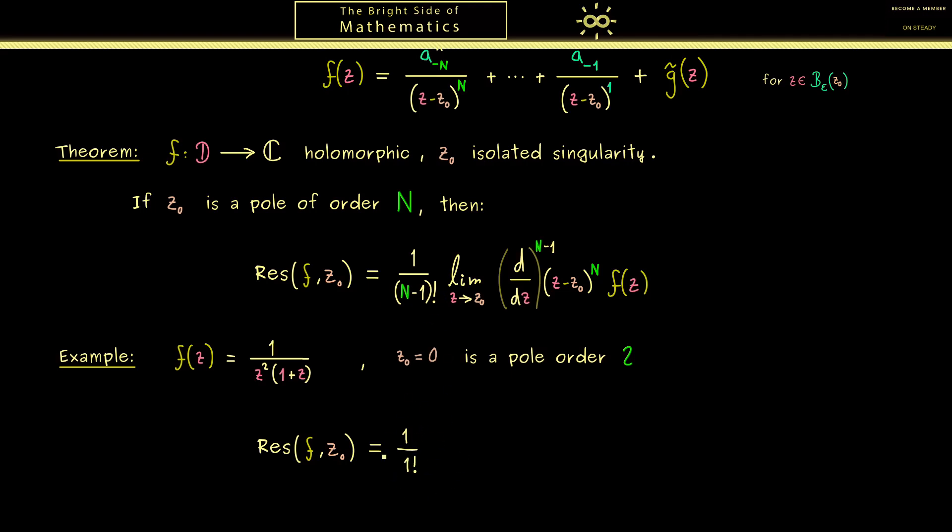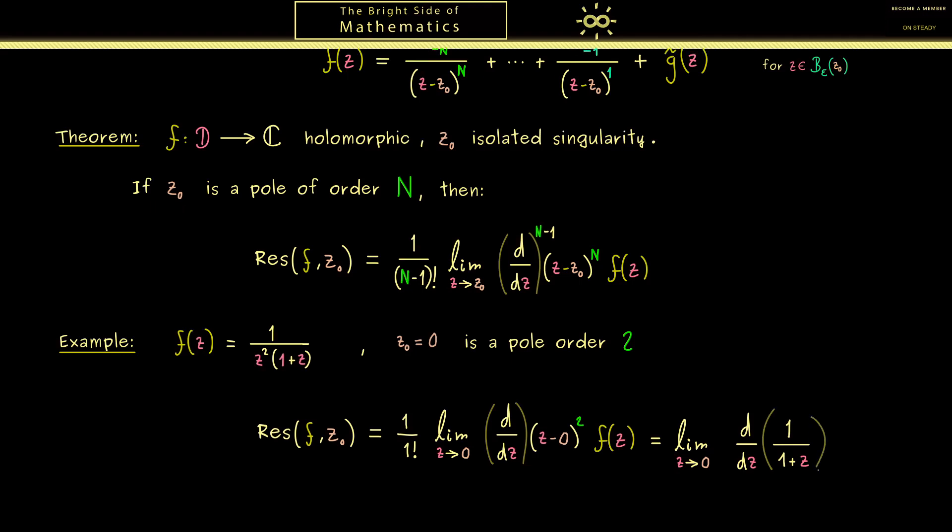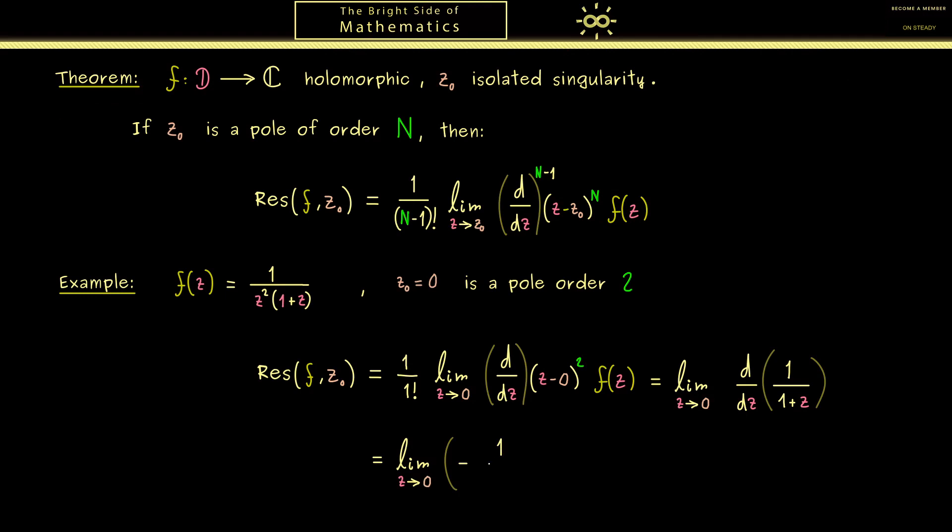This means now we can use this nice formula here where capital N is equal to 2. And indeed this makes the formula a little bit simpler. So for example, the factor in front is simply 1, and more importantly we just have to differentiate once. This is not hard at all because the function that remains here is very simple. Namely, you immediately see z squared will cancel here. So we just differentiate the function 1 divided by (1 plus z). Indeed this is a simple calculation you should already know from calculus: it's minus 1 divided by (1 plus z) squared. And now in the last step we simply send z to 0, and then you see what we get is minus 1. So that's the result now: the residue of the function f at the isolated singularity 0 is given by minus 1. And now this means whenever you have a contour integral where this function is involved, you can use this fact for the residue.